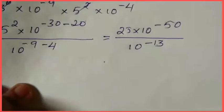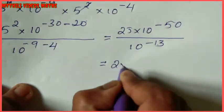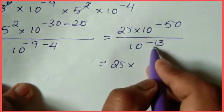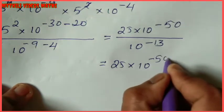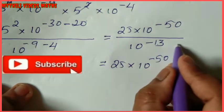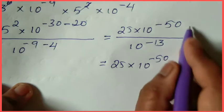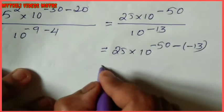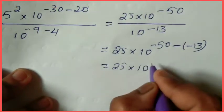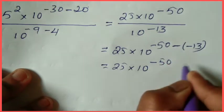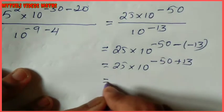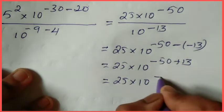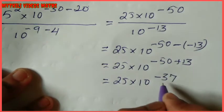After cancellation: 5^2 = 25. So we have 25 × 10^(minus 50), divided by 10^(minus 13). When dividing, subtract powers: minus 50 minus (minus 13) gives minus 50 plus 13 = minus 37. So the result is 25 × 10^(minus 37).